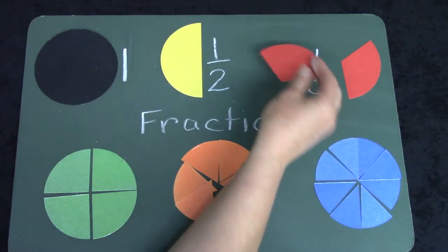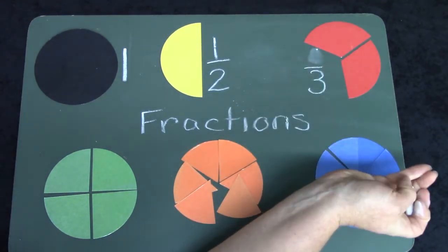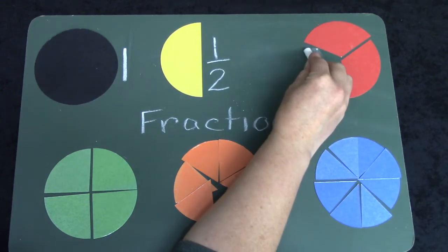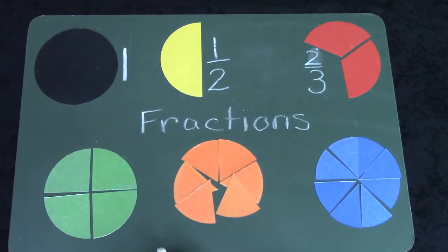If I had another piece, I would erase this top number because I don't have one out of the three. I have two out of the three pieces, or two thirds.